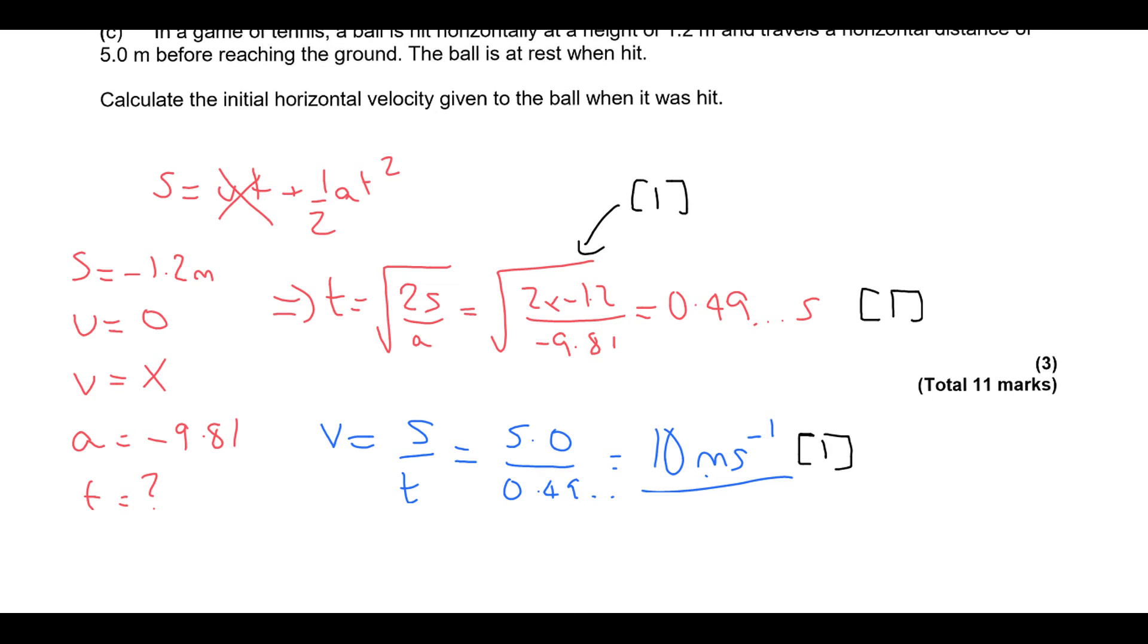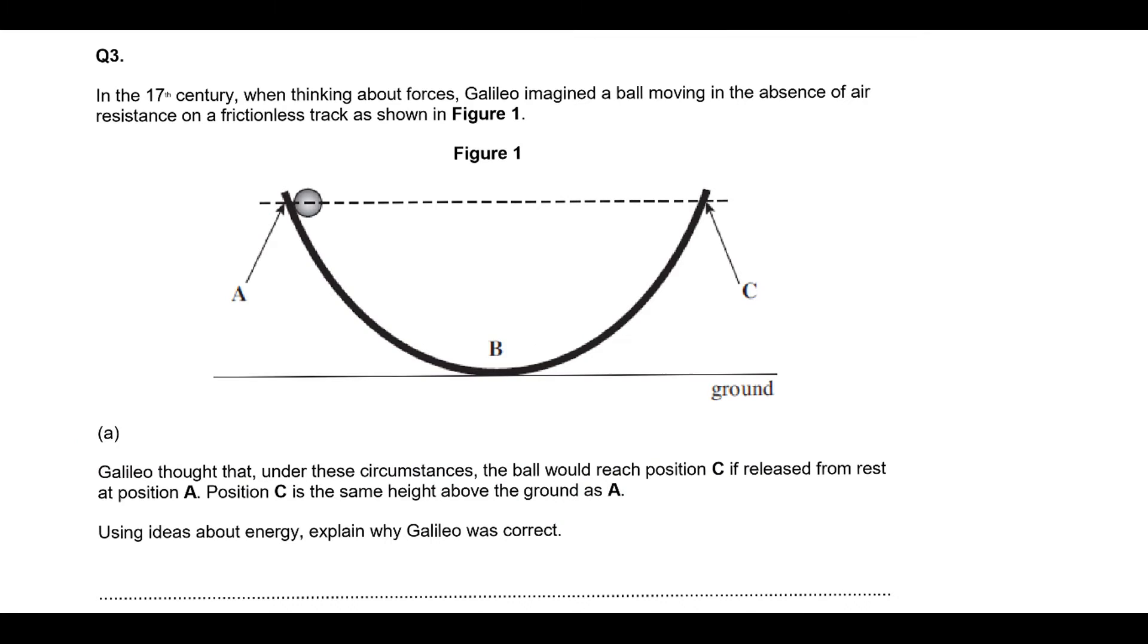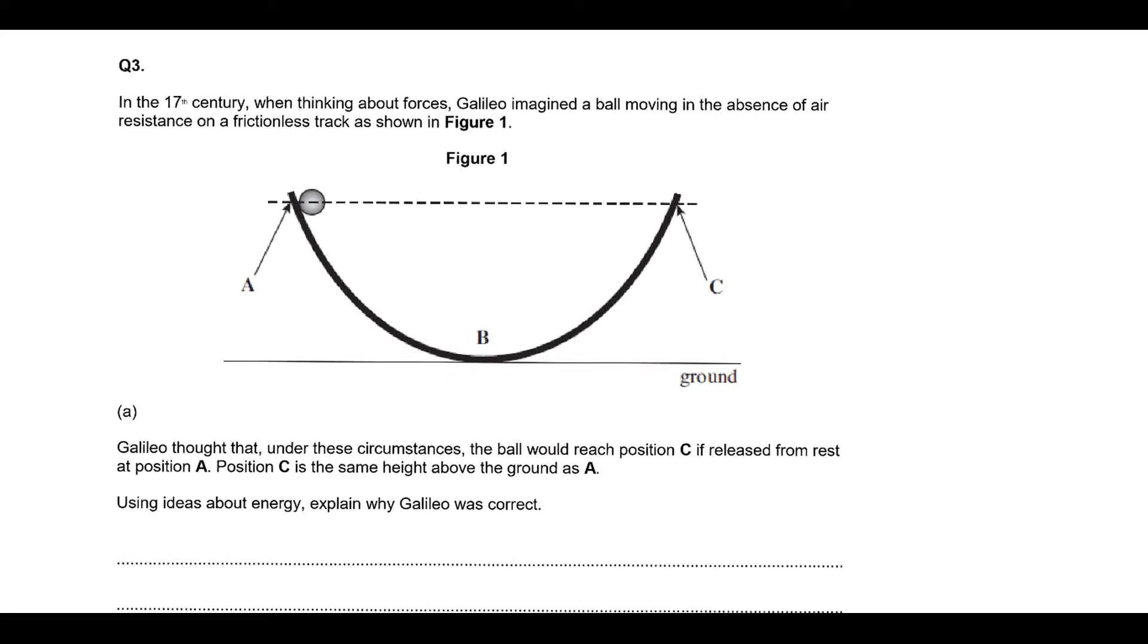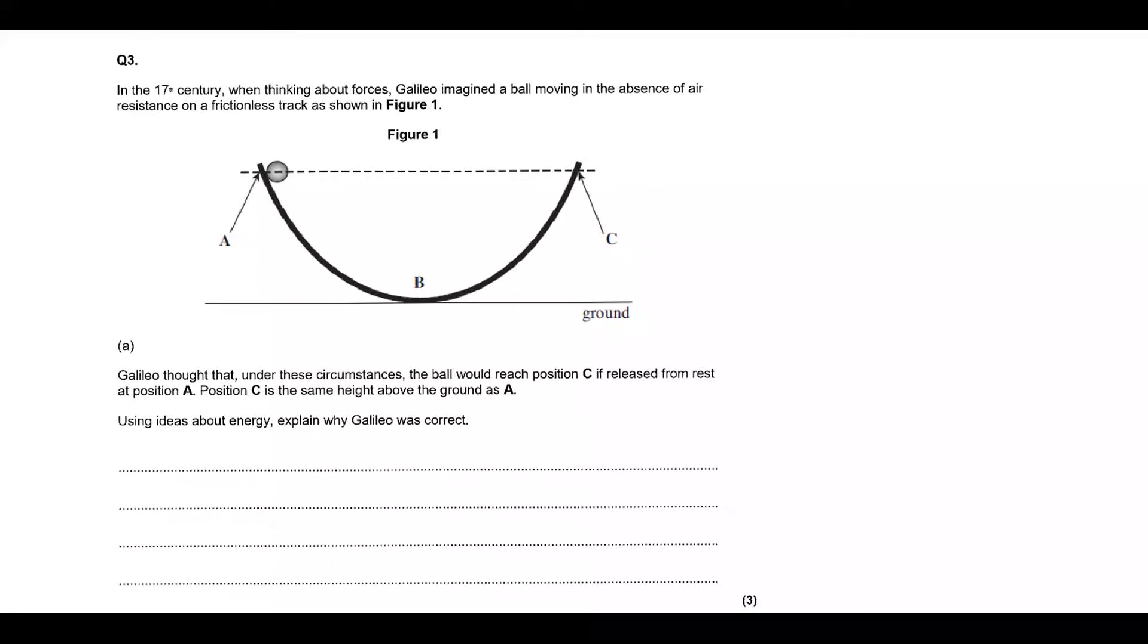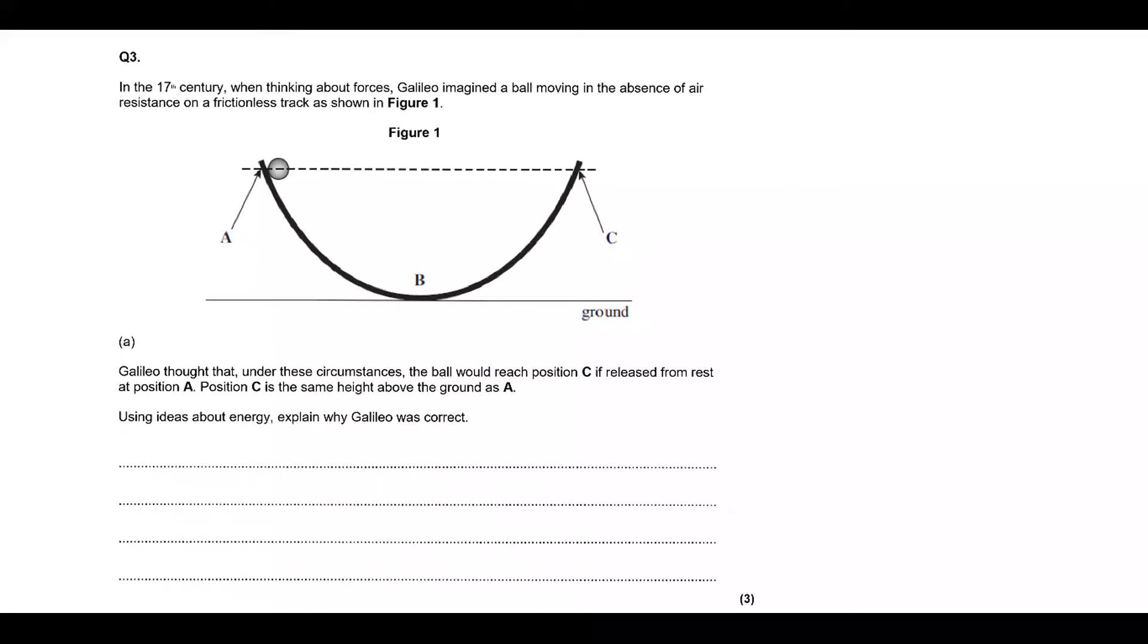OK, so let's move on to the next question. All right, so for this next question we're going to look at a Galilean thought experiment. So this is going to be done in the absence of air and the absence of friction so there's no work done against any kind of resistance force here. So Galileo thought that under these circumstances the ball would reach position C if released from rest at position A and C is the same height above the ground as A.